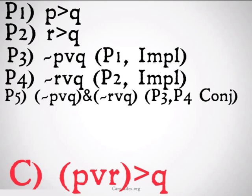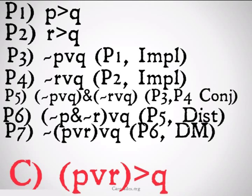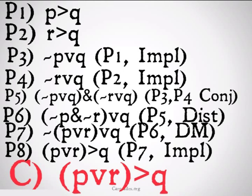Why will we conjoin them, you might ask? Well, there's a Q term in both of them. What that means is we can use distribution to end up with not P and not R or Q. Whenever you have two negations on either side of a conjunction, you can use DeMorgan's rule to bring that negation to the outside. It's not the case that P or R or Q. And, if you remember implication, if we're denying the first term and we have a disjunction in the middle, we can just switch that into an implication. To P or R implies Q, premise 7 implication. And, that's our conclusion.